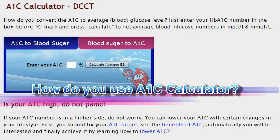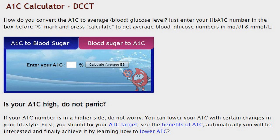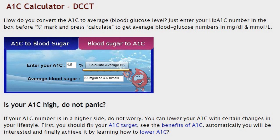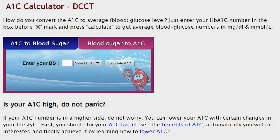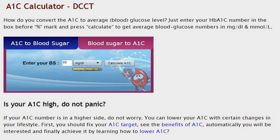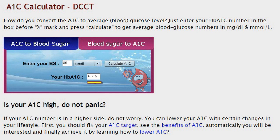How do you use the A1C calculator? To convert A1C to average blood glucose, enter your HbA1C number in the box before the 4% mark and press "Calculate B.S. Average" to get average blood glucose numbers in mg/dL and mmol/L. To convert blood sugar level to A1C, enter your blood sugar number in the box, select the unit in mg/dL or mmol/L, and press "Calculate A1C" to get your A1C equivalent.